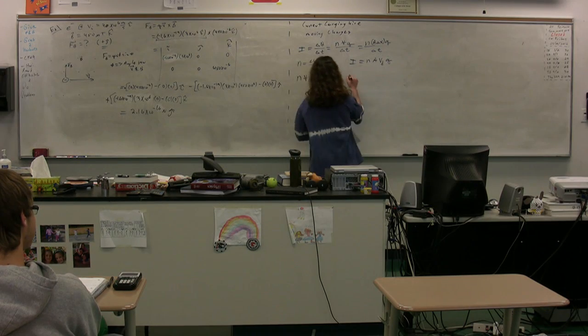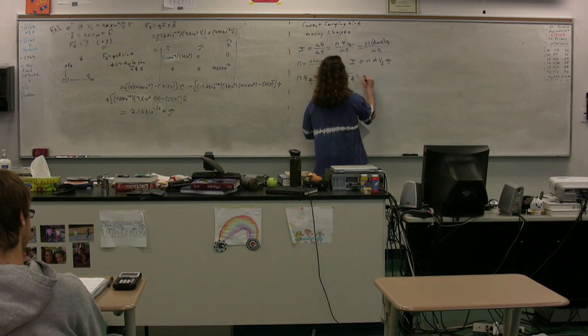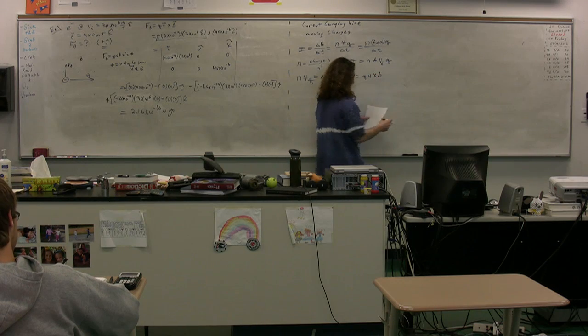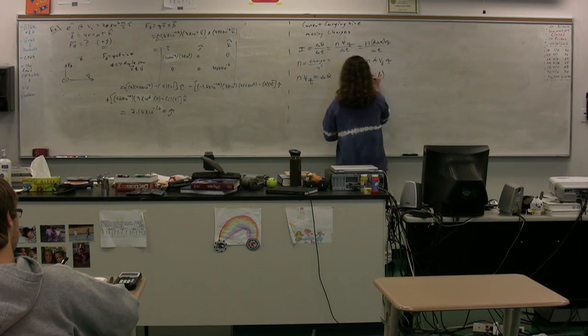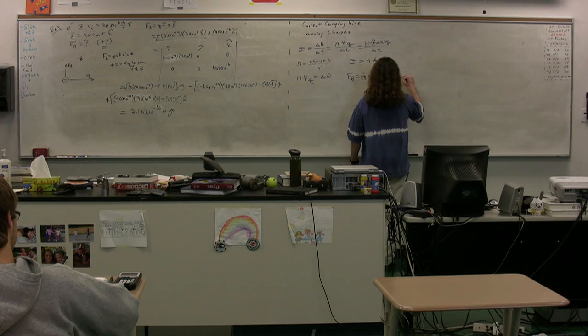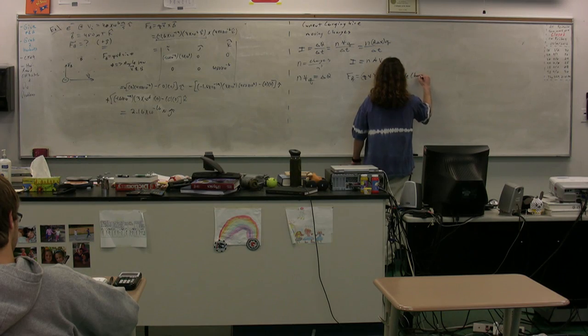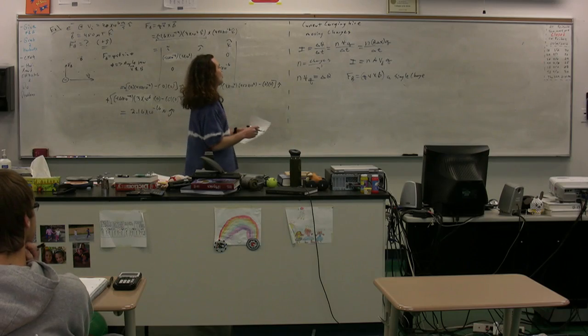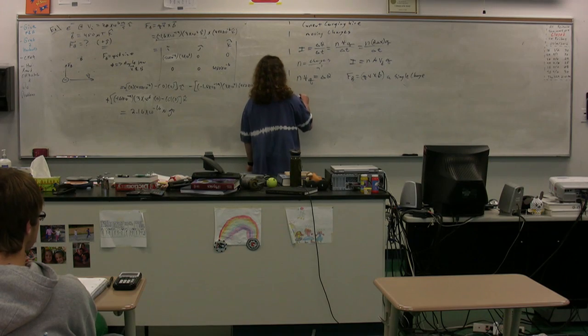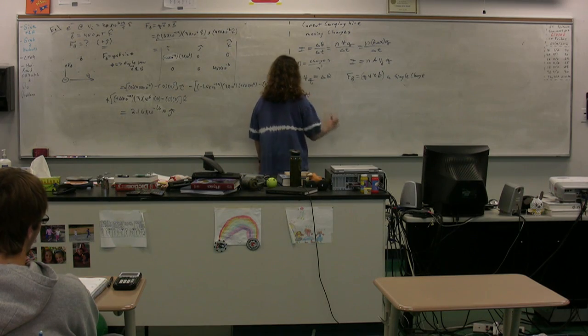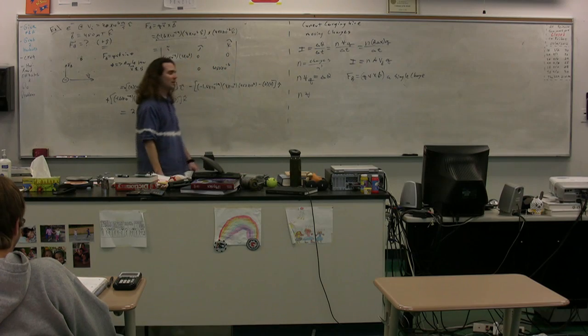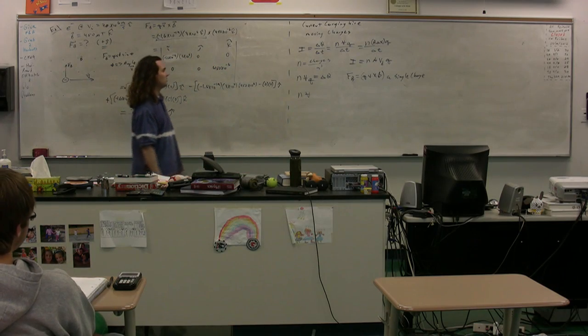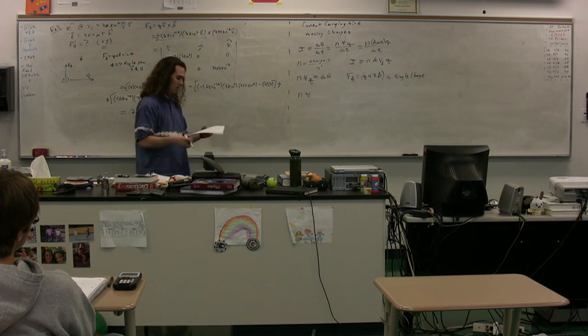So, we come back to the magnetic force is equal to q v cross B. This was for a single charge. But we need to look at it in terms of many charges. So we need the total number of charges on the wire. So if we take n times V, again the charge carrier density times the volume, this will give us the number of charges.